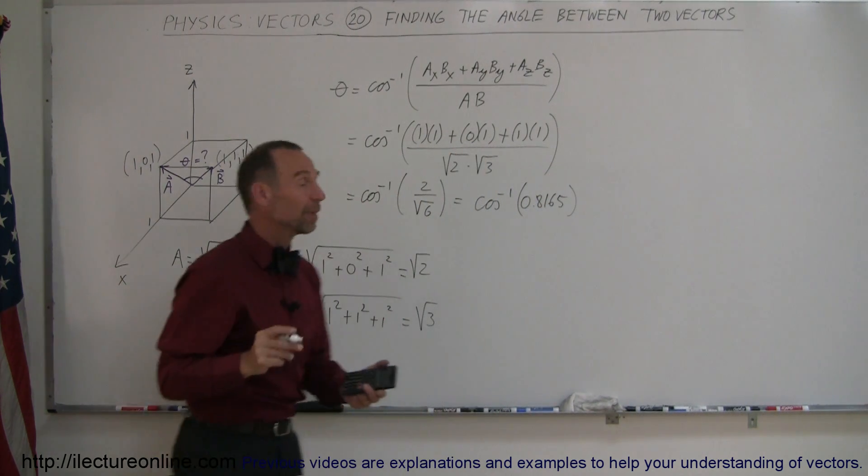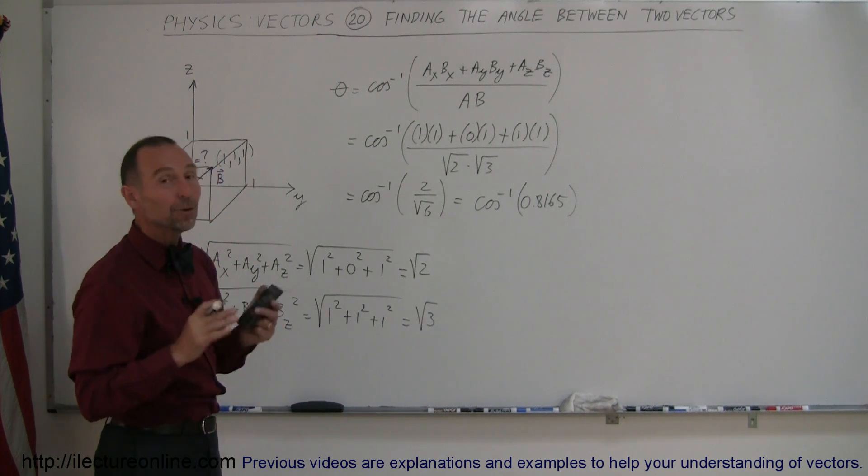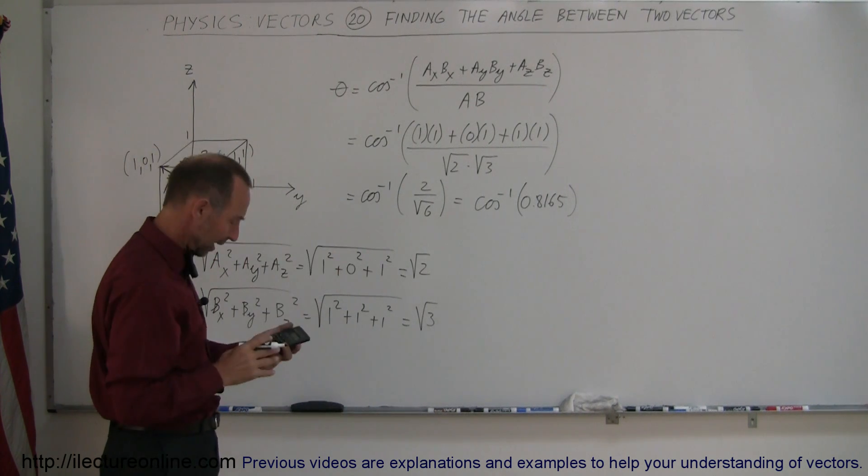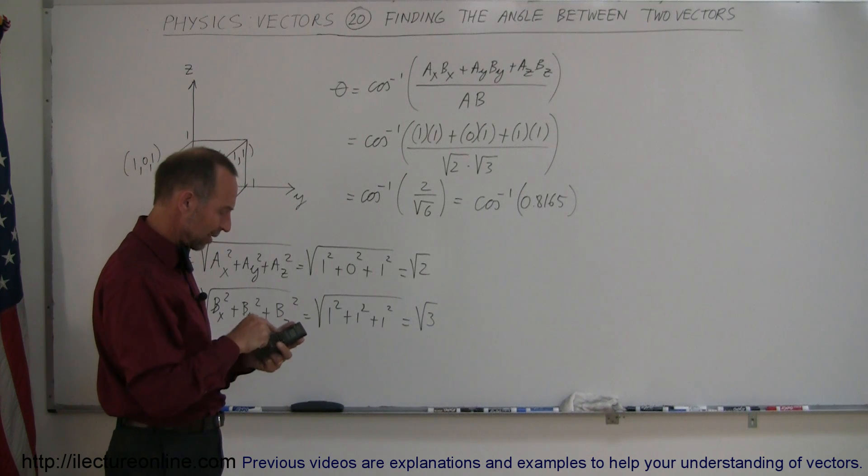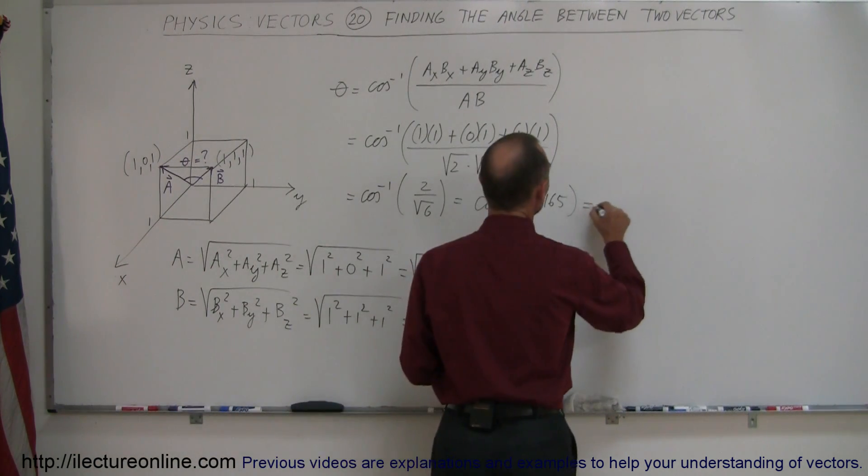Notice, if that number comes out to be greater than 1 or less than negative 1, you made a mistake somewhere, but it looks like we're on the right track. So take the arc cosine of that, and we get 35.3 degrees.